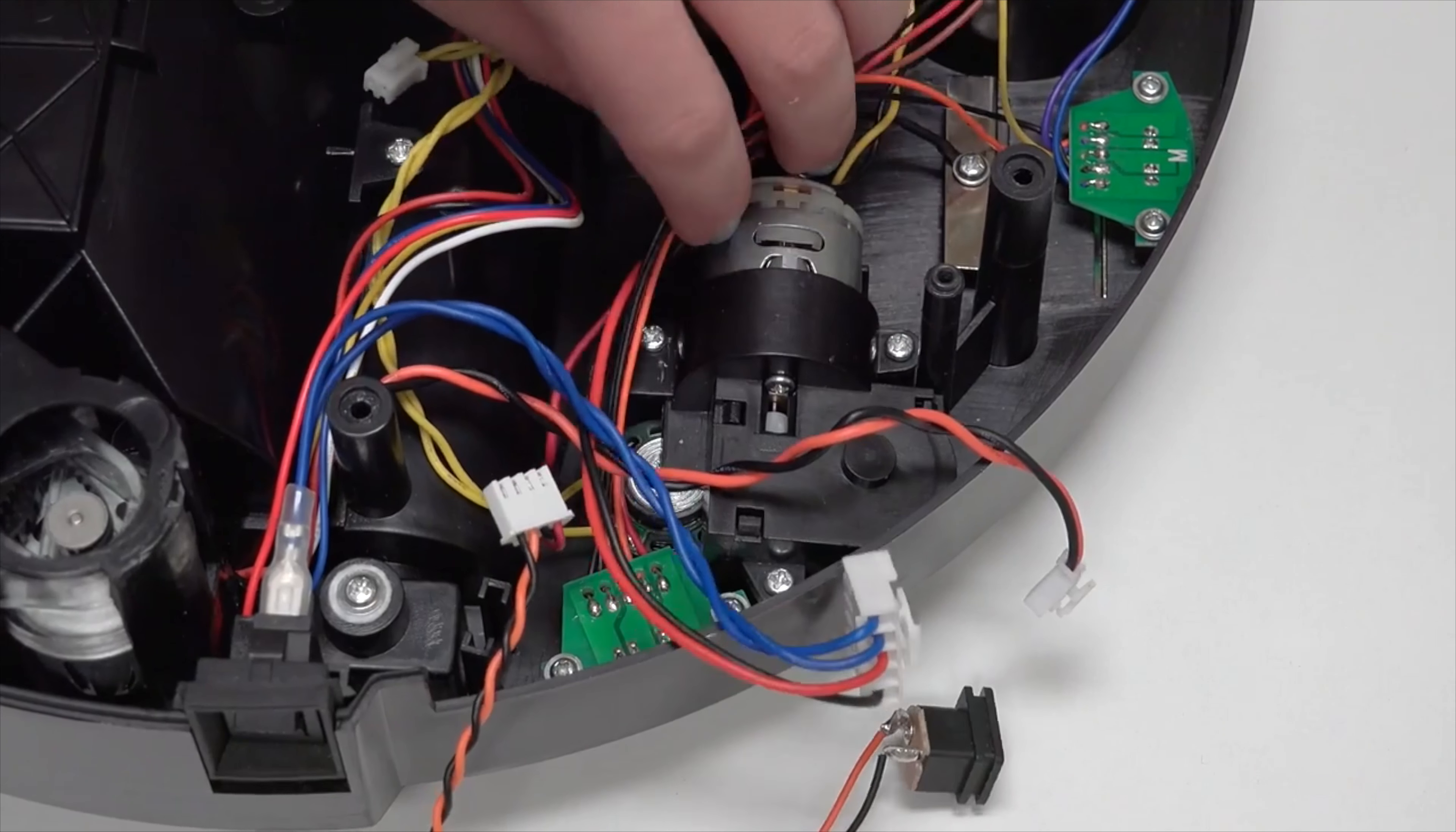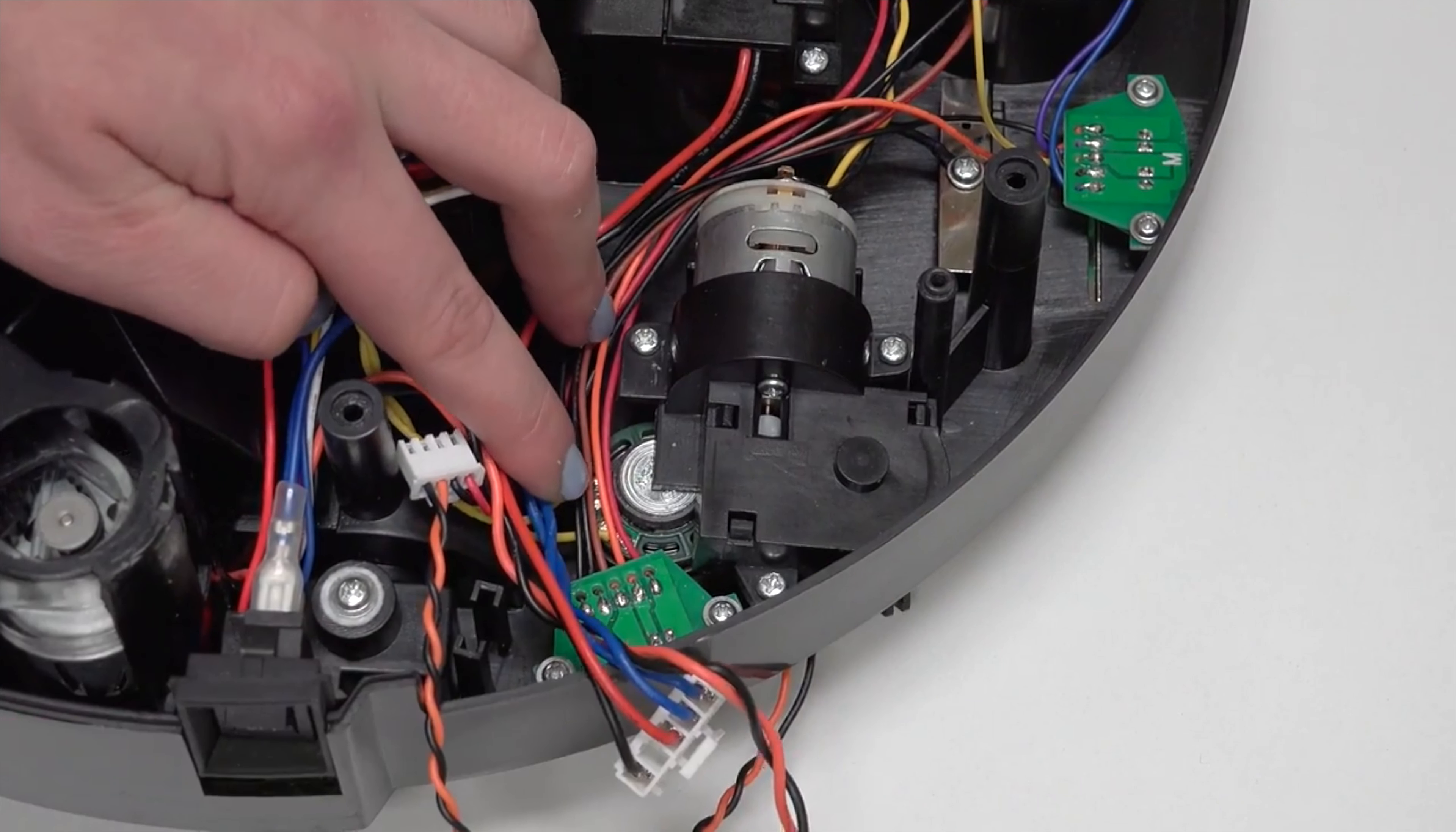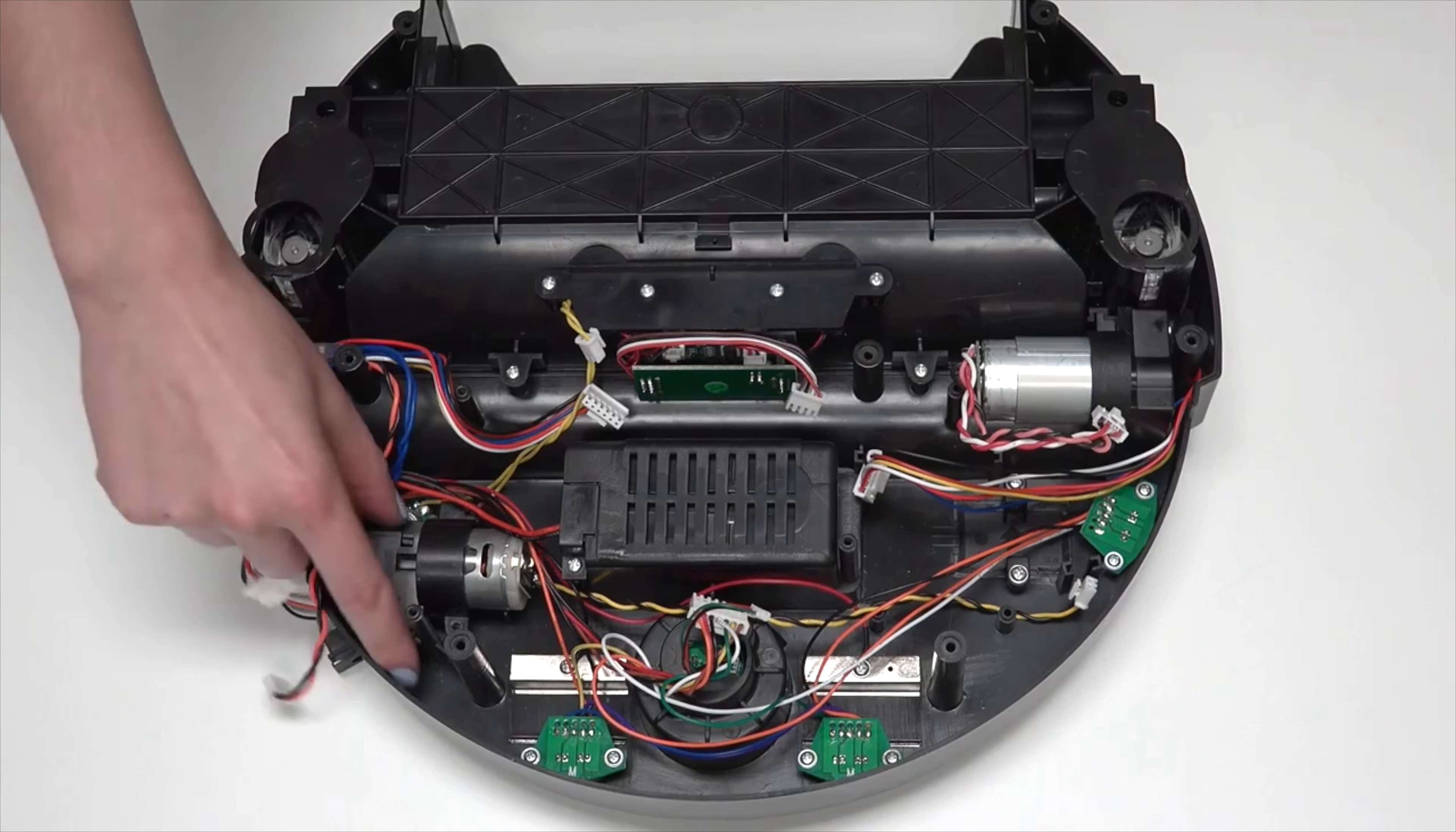In front of Bob's right wheel, you'll see the side brush motor, held in place by three screws. Remove all three and keep them aside for later reassembly. Then lift the motor out.